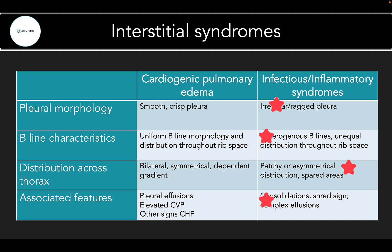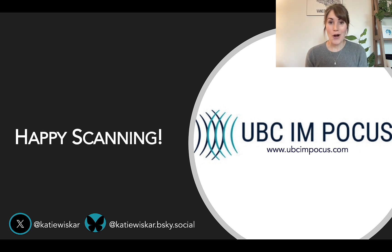Putting this case together: pleural morphology was mixed — some smooth areas on the right, but definite irregularity especially on the left. B-line characteristics were likewise mixed — uniform in the right upper chest but more disparate elsewhere. Distribution was clearly asymmetrical with a greater burden on the right, and skipped areas with A-lines on the left. Associated features included small bilateral shred signs and effusions. Together, this is not pure cardiogenic pulmonary edema — there's an infectious or inflammatory etiology at play. Clinical history and other POCUS findings would help complete the picture. Hopefully this helps you get more out of your lung ultrasound. Visit us at UBCIM POCUS for more screencasts, and happy scanning!